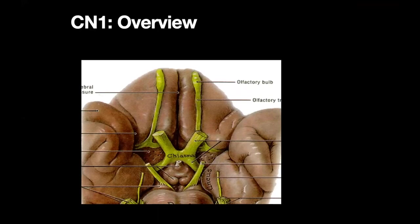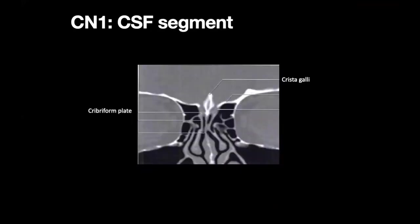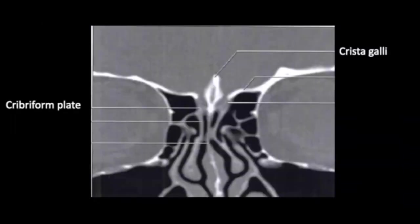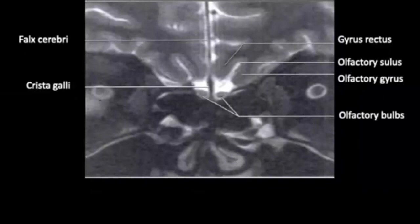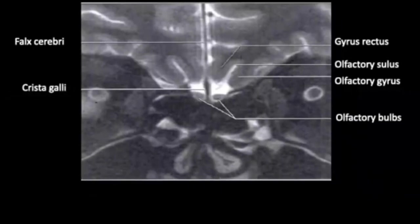The first cranial nerve, the olfactory nerve, consists of the olfactory bulb and the olfactory tract and lies along the basal frontal region. A coronal CT scan in bone window shows the CSF segment of the olfactory nerve; the bony landmark is the crista galli, which lies between the right and the left olfactory nerves. The groove in which the nerve lies is called the olfactory groove, and its depth is important for ENT surgeons — classified by the Keros classification. On coronal T2-weighted imaging, the olfactory bulb is surrounded by CSF. Two gyri are seen: the gyrus rectus medially and the olfactory gyrus laterally.